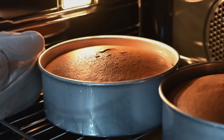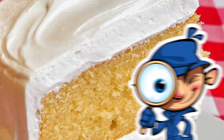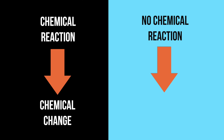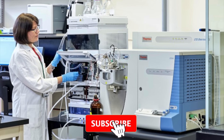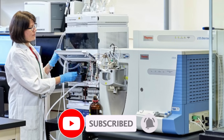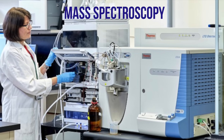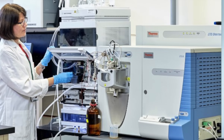The next time you bake a cake, look for the bubbles. Inside each bubble is a little bit of gas. If you see signs of a chemical reaction, it is most likely a chemical change. If these signs are absent, the characteristic is probably a physical property, therefore a physical change. Please note, the only way to be completely certain whether a change is physical or chemical is to perform a chemical analysis, such as mass spectroscopy, on the substance to determine its composition before and after a reaction.